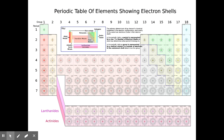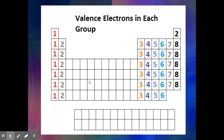Looking at the periodic table, all of group 1 have 1 valence electron, group 2 have 2, and so on. This is something you need to memorize — the number of valence electrons corresponds to the main block group number. Do note that helium is a little different: it has a filled shell, but only has 2 electrons.